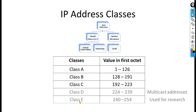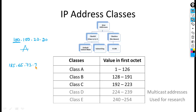Let's do an example. For IP address 100.100.20.20, we check the first octet only. Is it in the range 1 to 126? Yes — so this address belongs to Class A. Another example: address 185.65.73.24. The first octet is 185. Is it in the range 1 to 126? No. Is it in the range 128 to 191? Yes — so this address belongs to Class B.